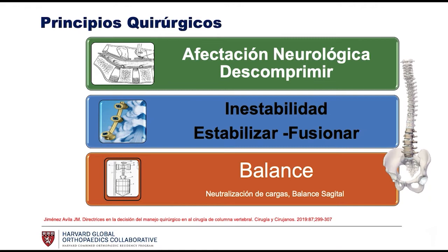The principles that we must take into account every time we elect for spine surgery are the principles of decompression, stabilization, balance, and fusion. This will allow us to obtain a better result. We know that patients who have neurological involvement can be decompressed. This can improve stability and functional aspects when the patient has an instability generated by the fracture and we plan to stabilize it with screws. We must consider the structural aspect when placing our rods and leaving the spine as stable and balanced as possible, otherwise we may have unfavorable long-term results.